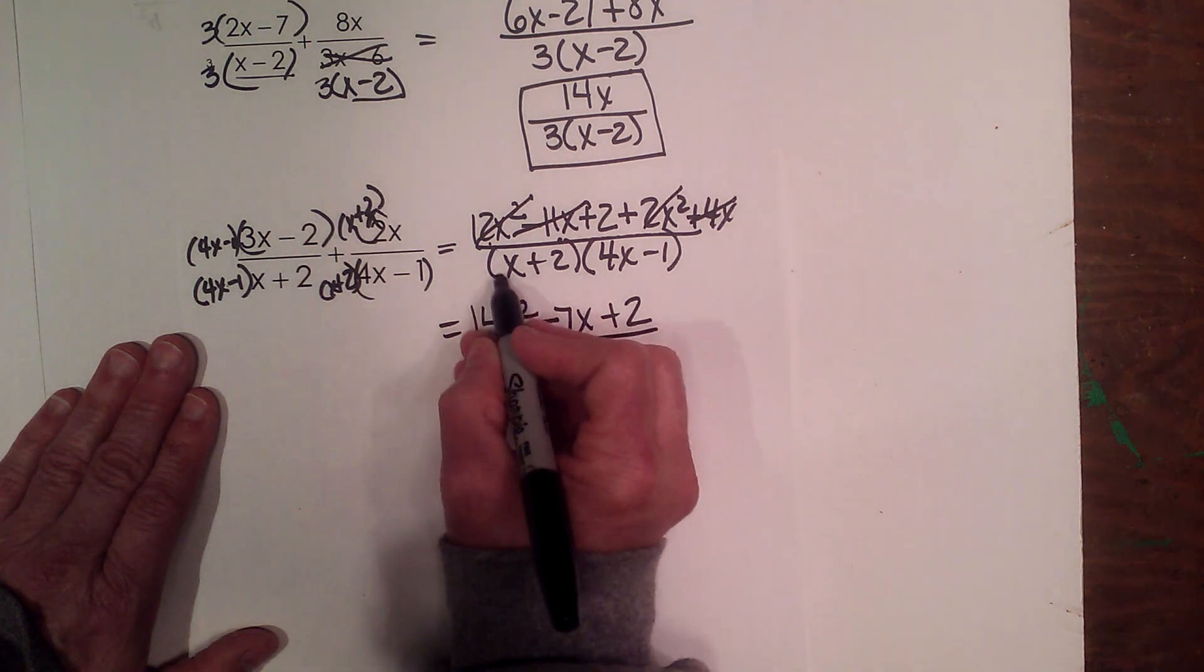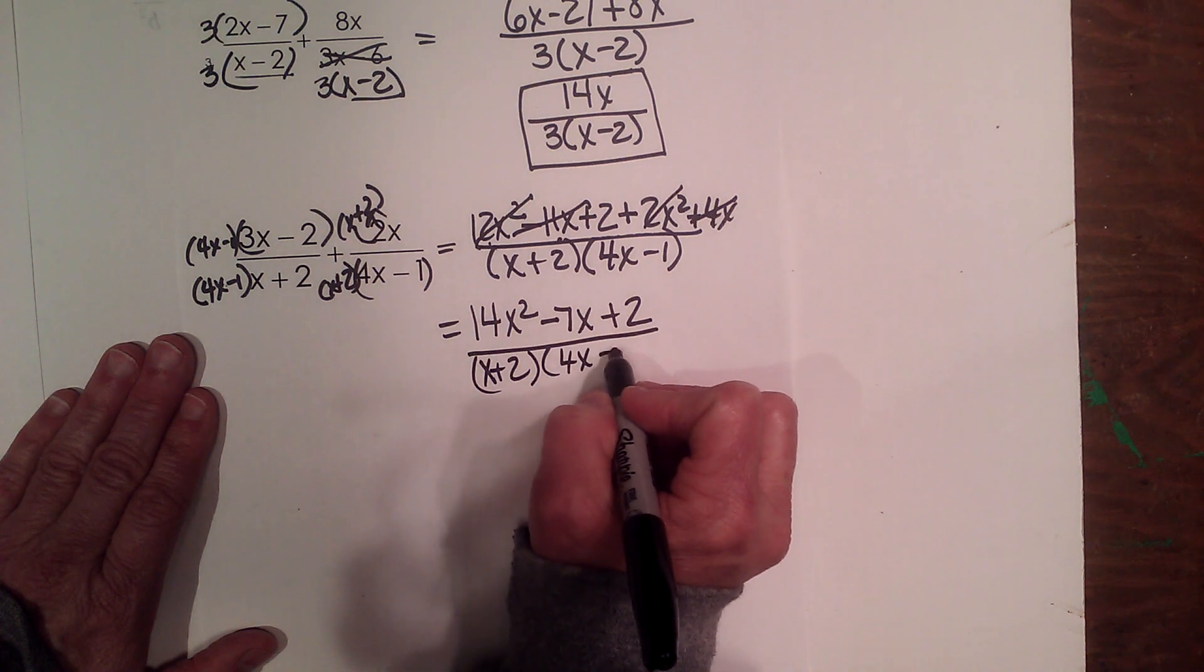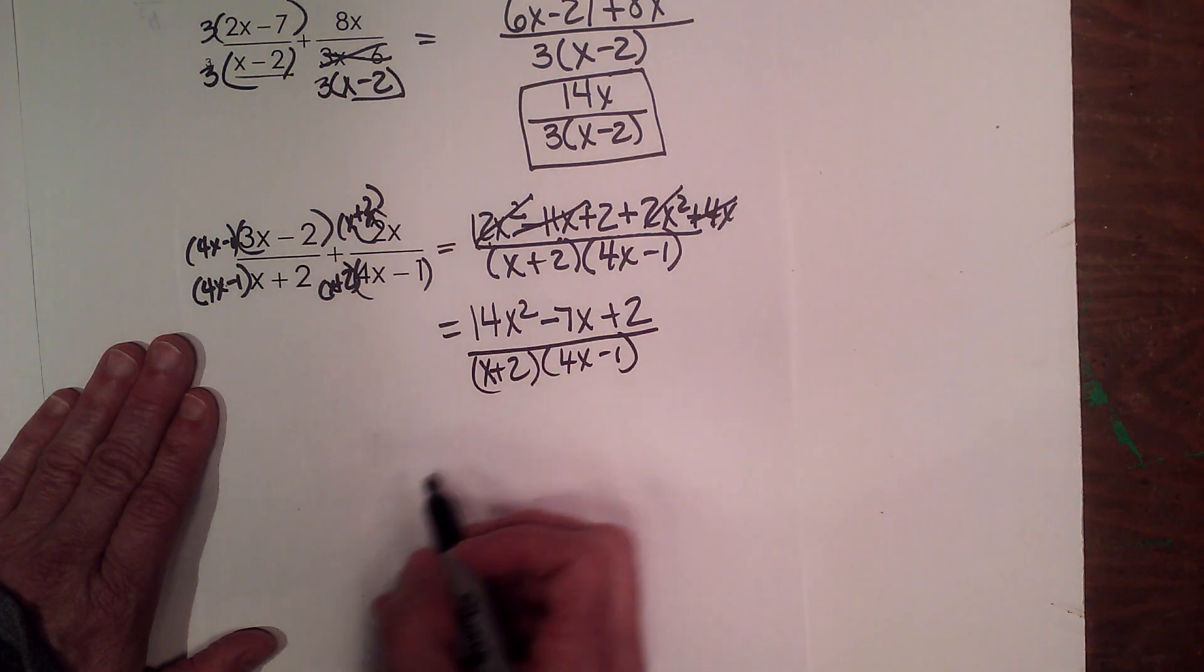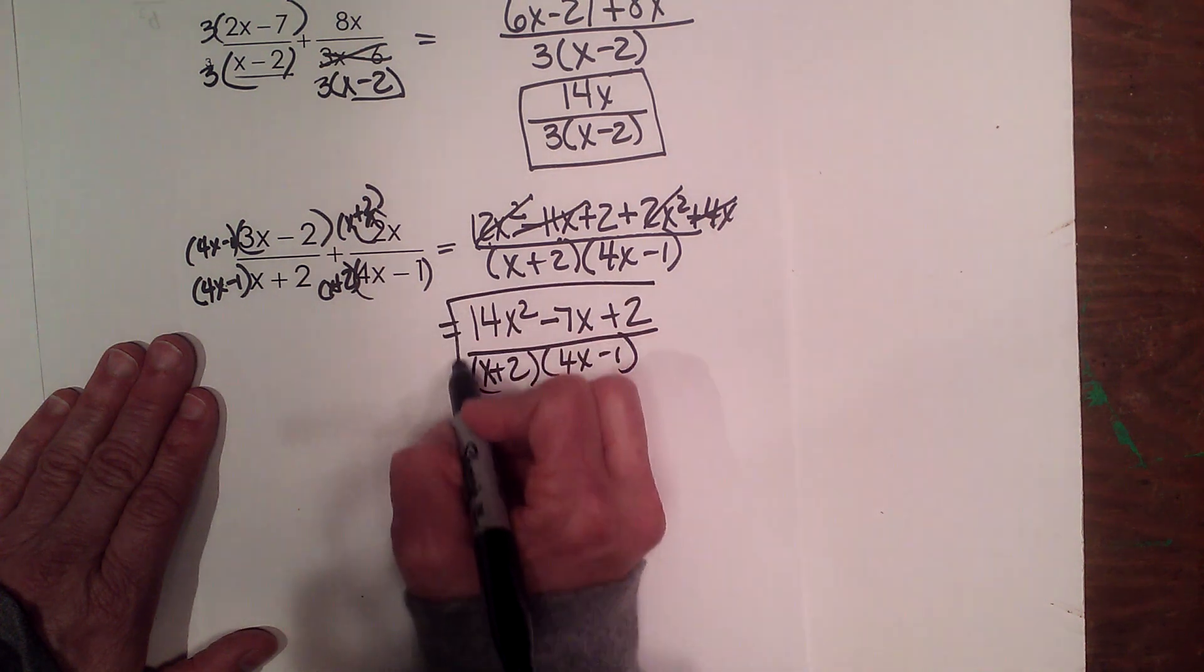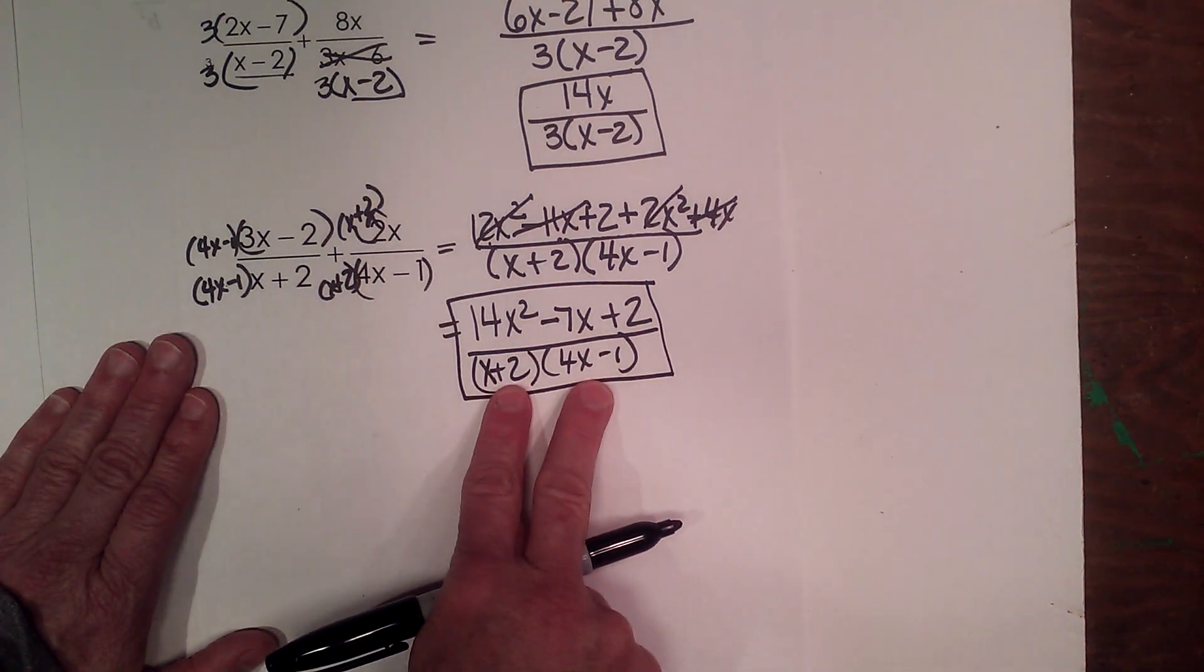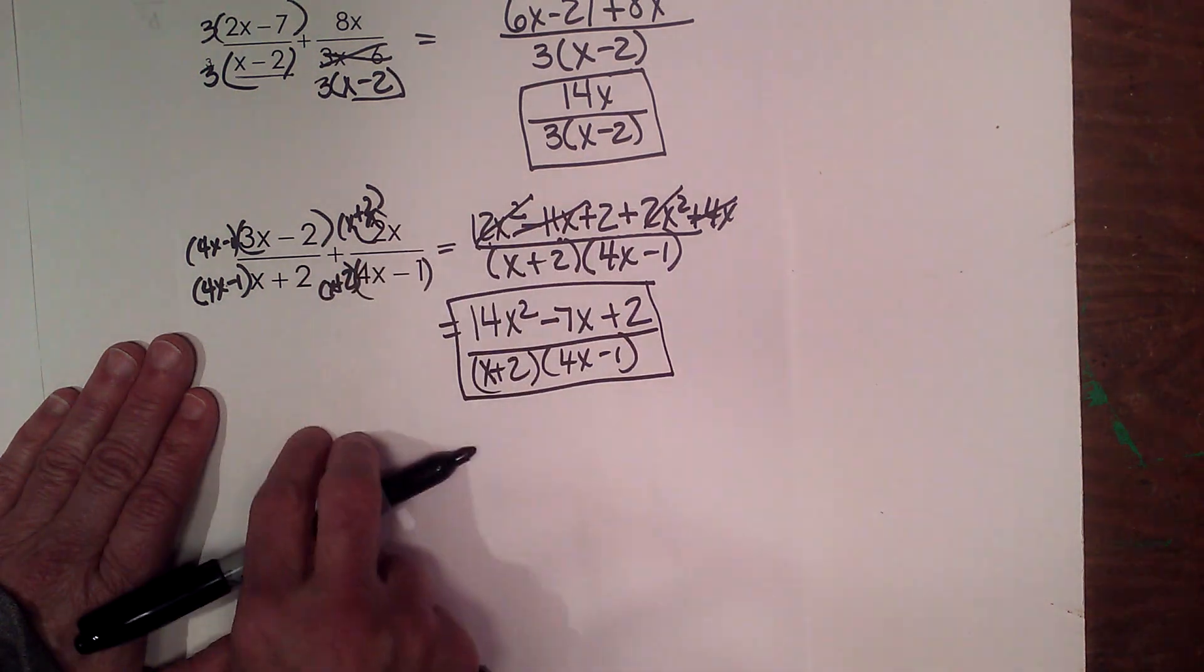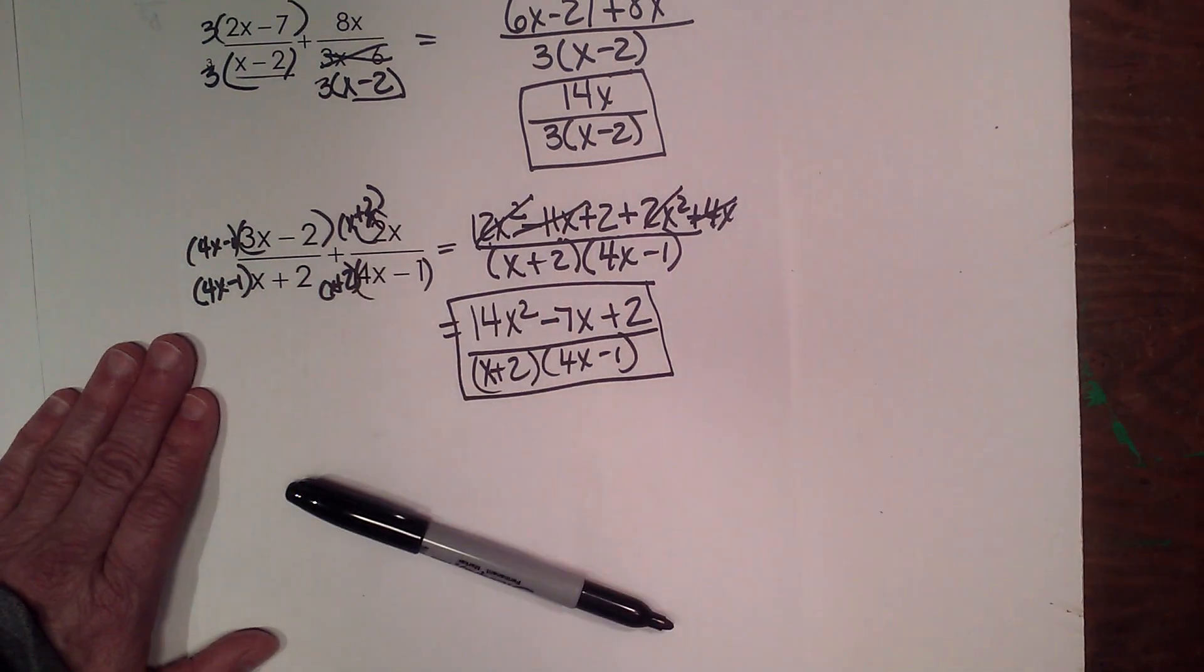I now bring down x plus 2 and 4x minus 1 as my common denominator. And boom, I'm done. There is my solution. I finished combining two rational expressions by adding, getting common denominators, and there's my simplified answer.